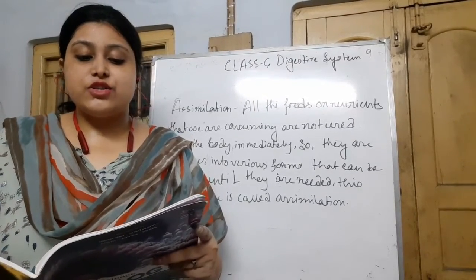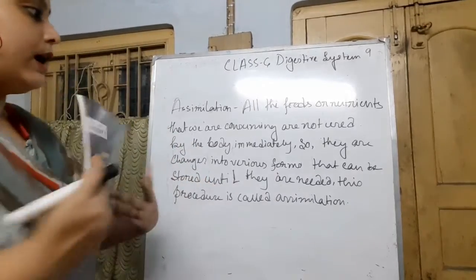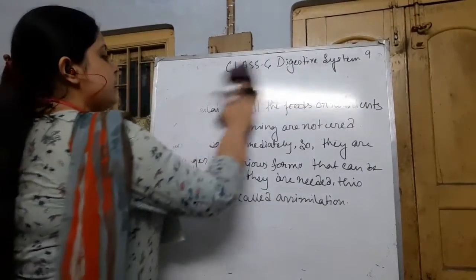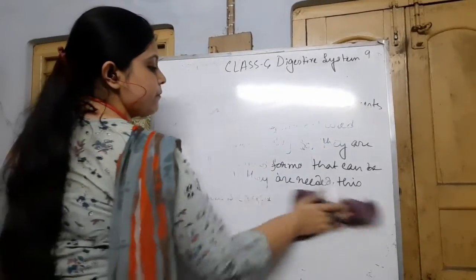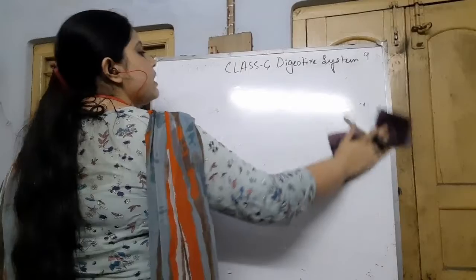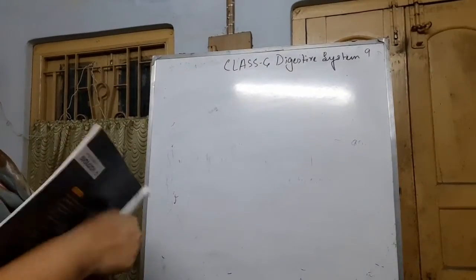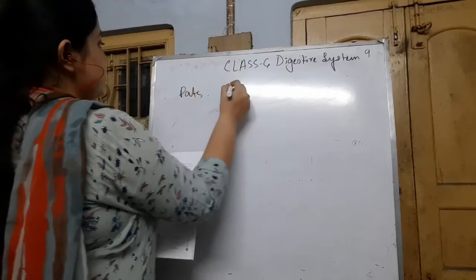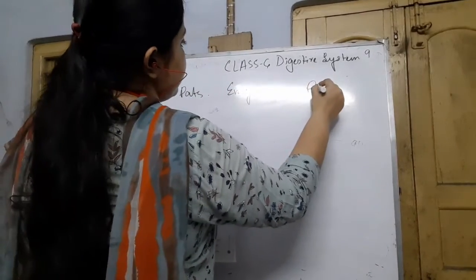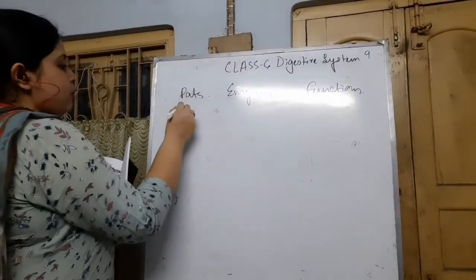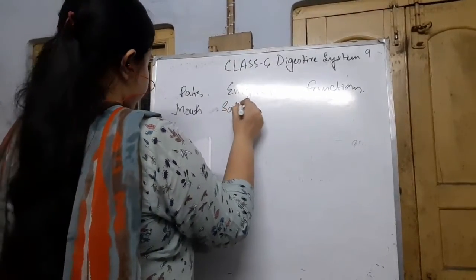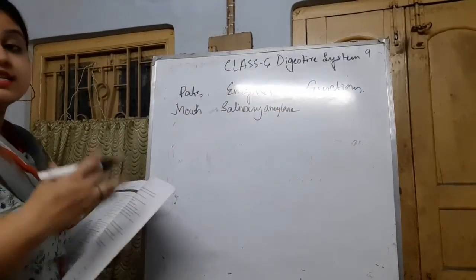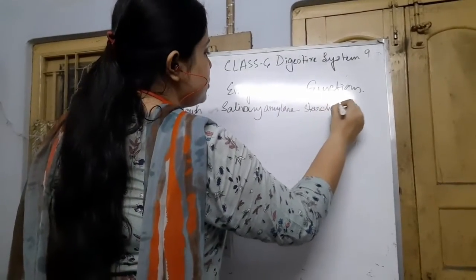Let me summarize the functions of various digestive enzymes from the mouth to the small intestine. The table has the parts, the name of the enzymes, and their functions. First, in the mouth, salivary amylase is present. The function of salivary amylase is to change starch into smaller molecules.